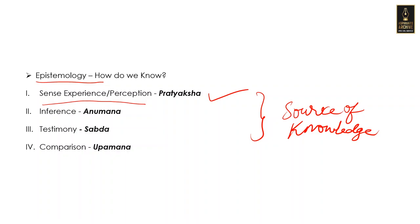Let us see one famous example from Indian philosophy — the example of smoke, hill, and fire. This is a classical example you will encounter many times while studying different Indian philosophical schools. Let us say you see smoke on a hill from far away, and somebody asks why there is smoke. You say from previous experience that smoke is seen only when there is fire, so you conclude there is a fire on the hill — even though you have not actually seen the fire. This is an example of inference, called Anumana in Sanskrit.